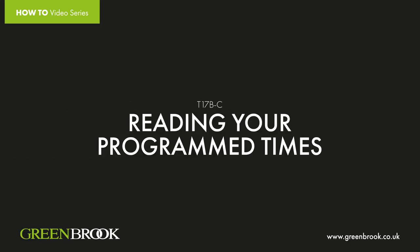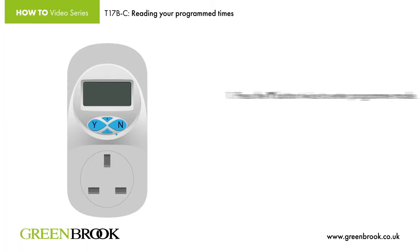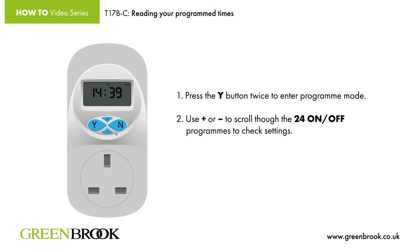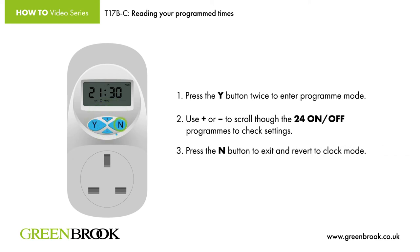Reading your program times. Step 1: Press the Y button twice to enter program mode. Step 2: Use plus or minus to scroll through the 24 on/off programs to check settings. Step 3: Press the N button to exit and revert to clock mode.